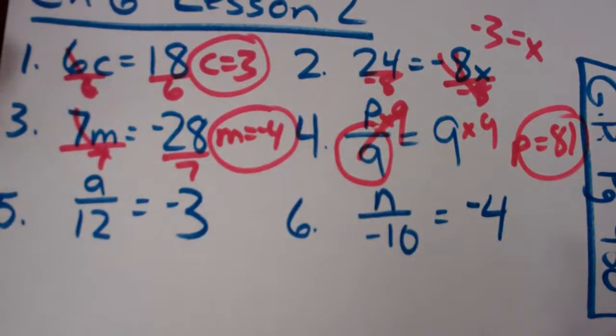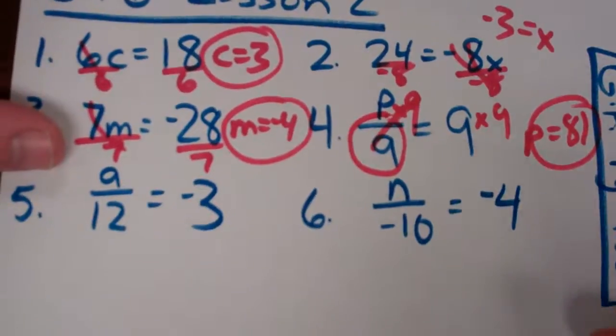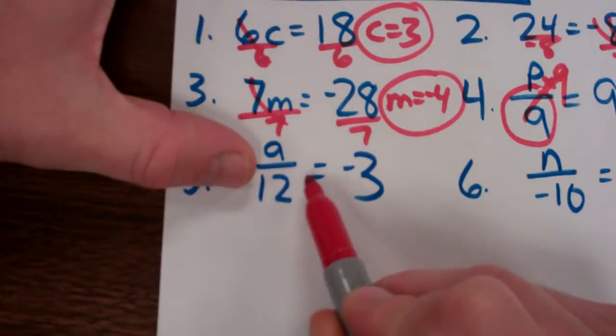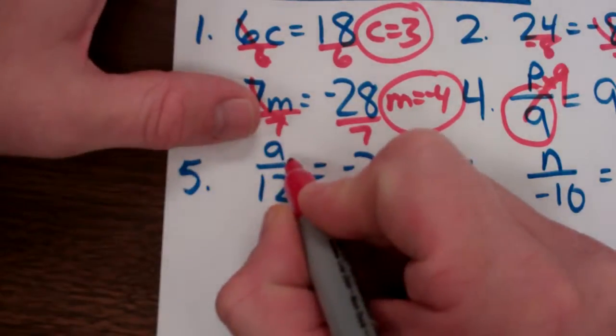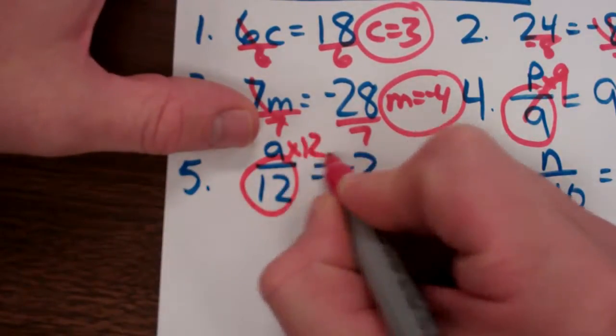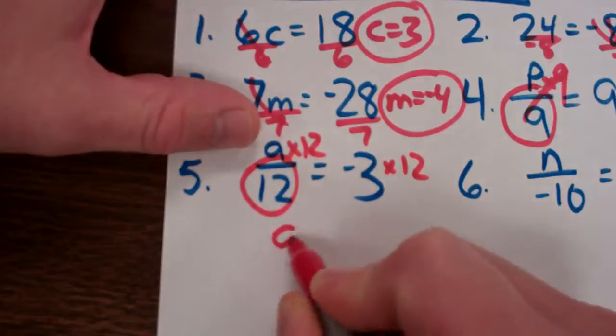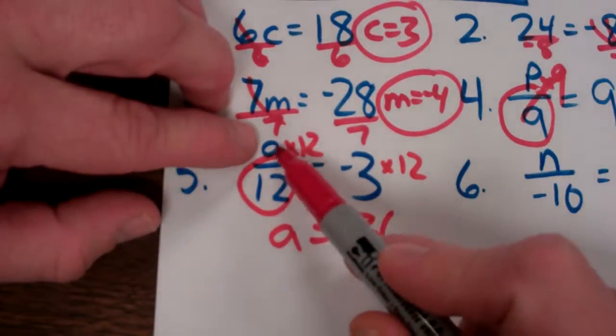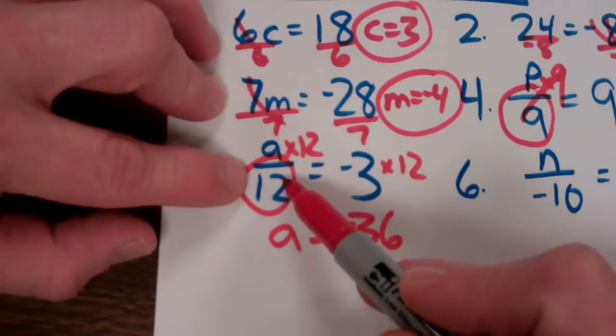Once again, people will put 1 down, but you have to understand what's going on here. A divided by 12. That means somebody already divided. I need to undo divide by 12 by multiplying by 12 on both sides. And so A equals negative 36. And if you plug it back in, what's negative 36 divided by 12? Negative 3.